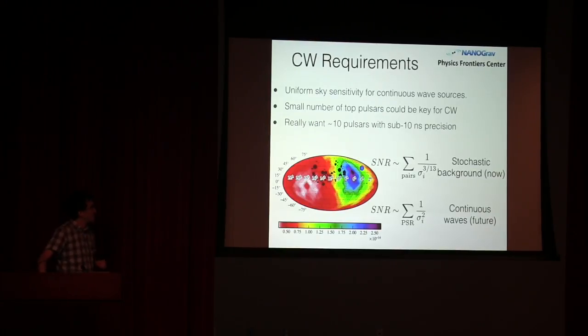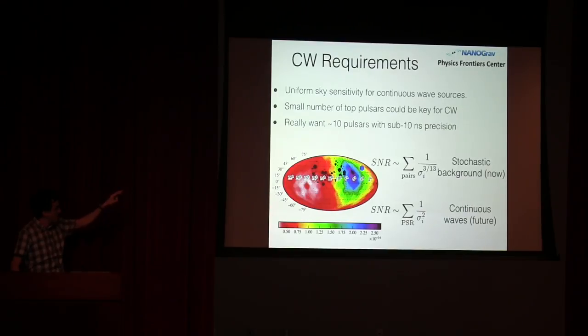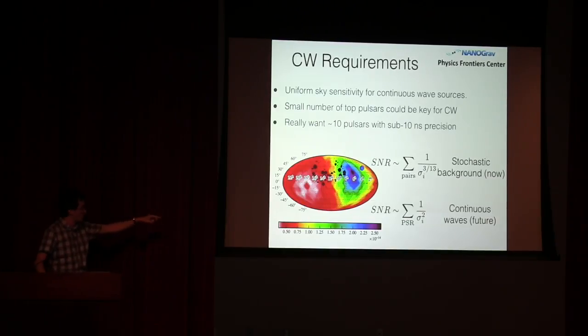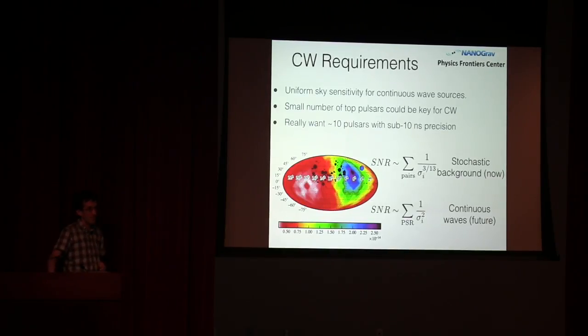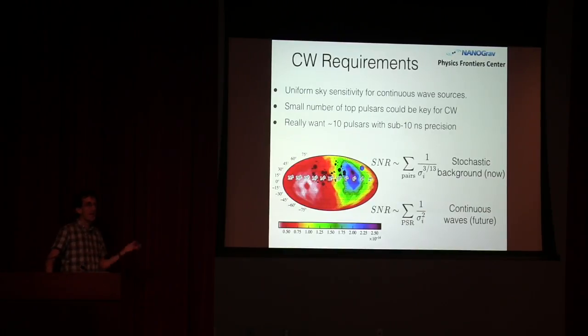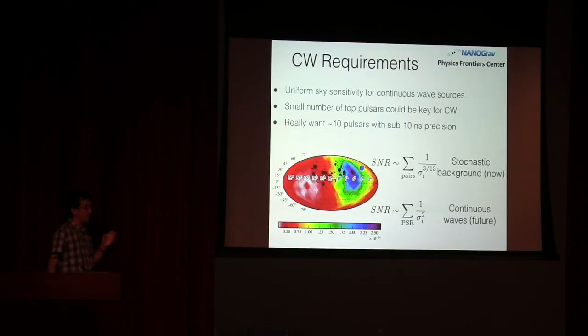But when you move to the continuous wave regime in the future, it's really just looking at something like a sum of the RMS for the best individual sources. So the best individual sources really dominate that sum on the bottom there. Instead of having tens or hundreds of sources that we're timing now at modest precision, you might be able to get away with just having a smaller number, say 10 objects, that you time with really phenomenal precision. And that would give you all the observations you need to understand the individual supermassive black hole binaries that you want to find.